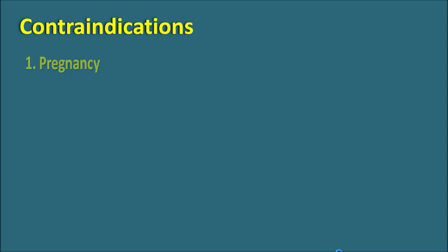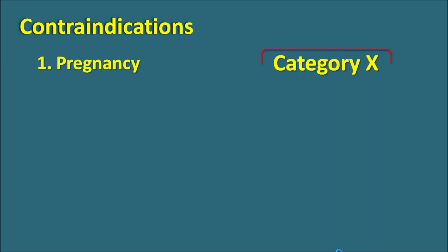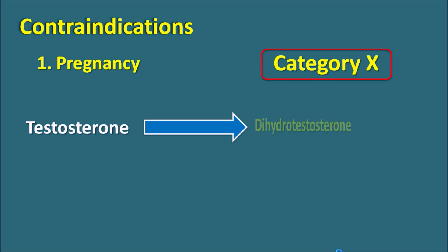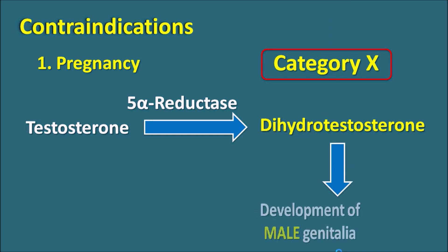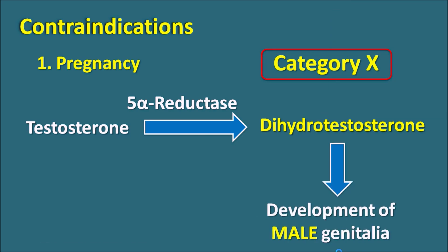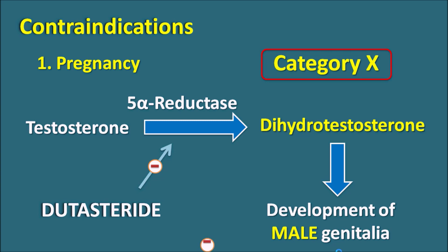The first contraindication is pregnancy. This drug is categorized as Category X and is strictly contraindicated in pregnancy. Testosterone is converted to dihydrotestosterone by 5-alpha reductase, and DHT is responsible for the development of male genitalia. When dutasteride is given, it inhibits this conversion, resulting in inhibition of male genitalia development in the male fetus. Therefore, this drug is strictly contraindicated in pregnant women.